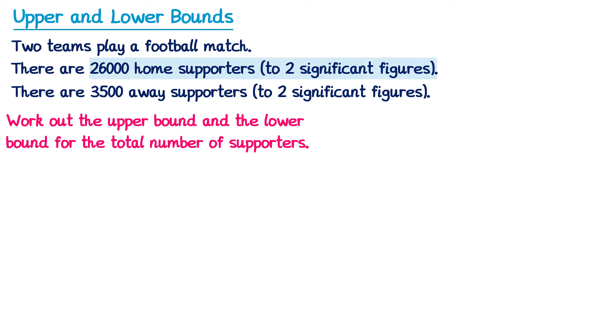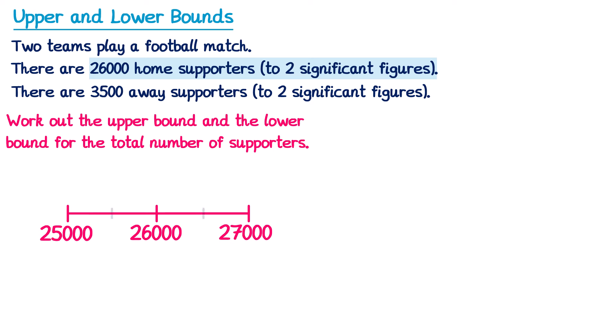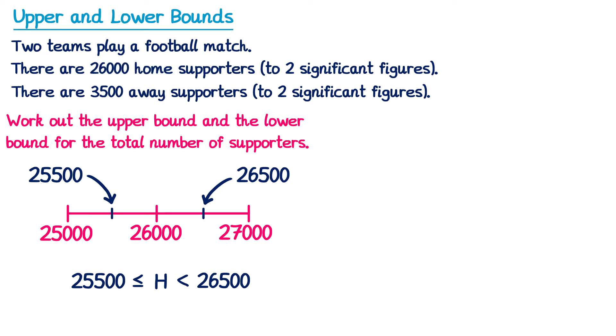Let's start with the home supporters — 26,000 to two significant figures. The number immediately below this to two significant figures is 25,000 and above is 27,000. Halfway in between those gives us 25,500 and 26,500. So the error interval for the home supporters is between 25,500 and 26,500.